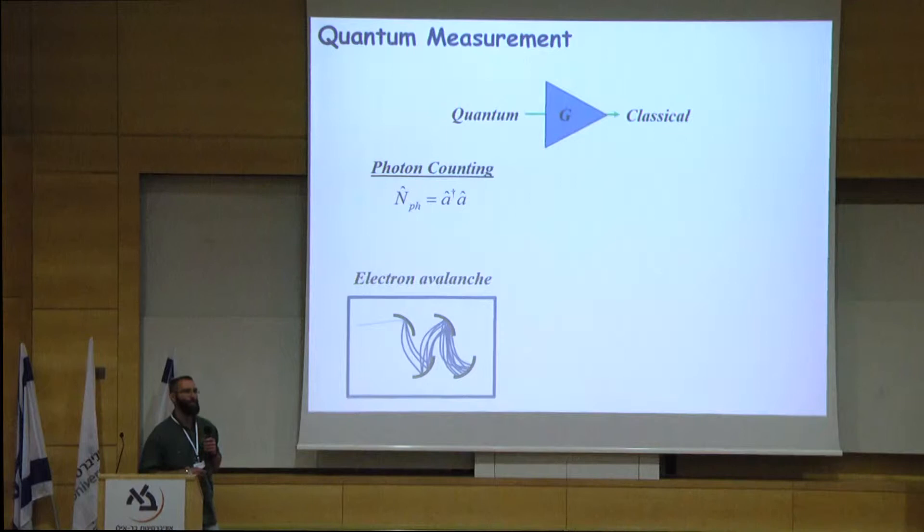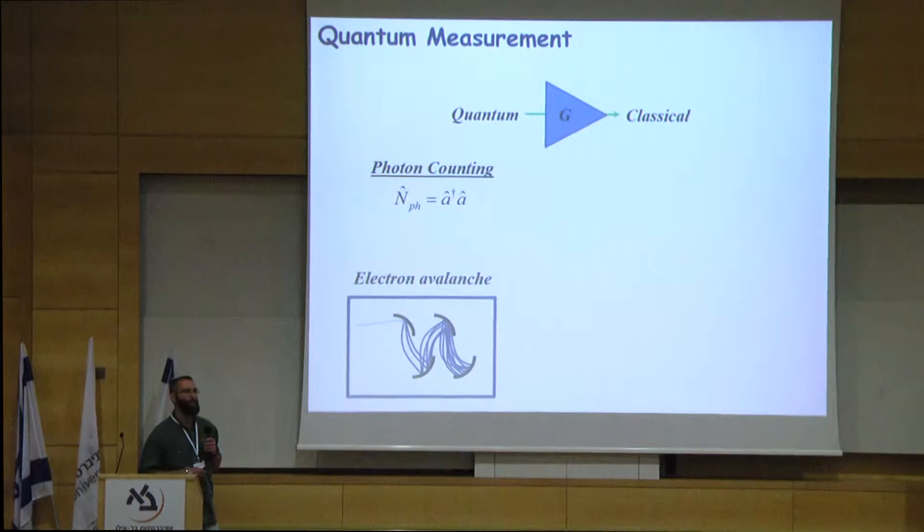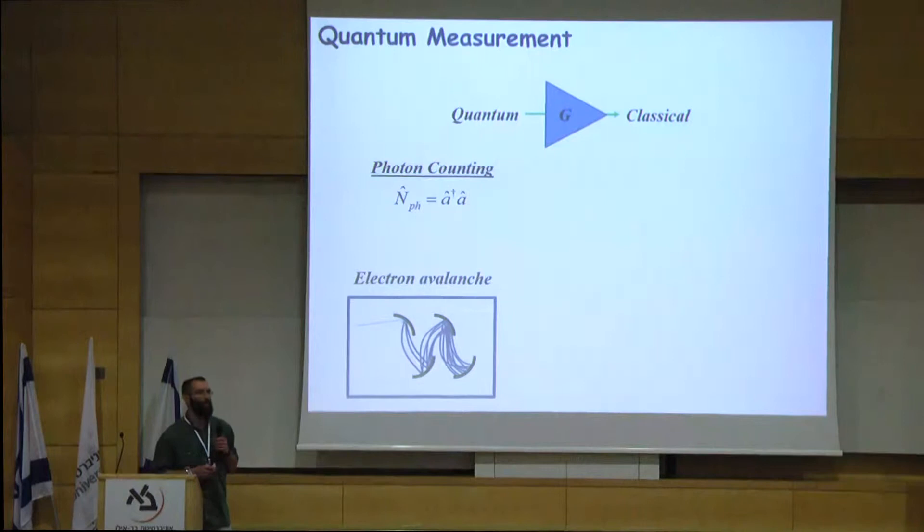The second measurement is the homodyne measurement, measuring the quadratures of the light. This is a fundamental measurement because the quadratures are fundamental variables that act as the optical analog of position and momentum.